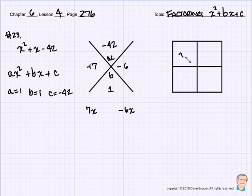Let's go into our box. In the upper left we put X². In the lower right, we put -42. We place 7X in the upper right and -6X in the lower left.